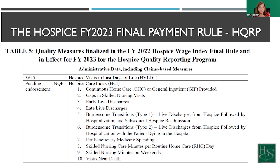Each one of these potentially has a point. You get zero points or one point, with the highest possible score being 10. Each of them is calculated based on whether you are in compliance or not — some require over 90 percent, some require under. Two components I wanted to point out specifically are numbers eight and nine: skilled nursing care minutes per routine home care day and skilled nursing minutes on the weekends. There's no other way for CMS to know the minutes you have spent in a visit without having the units reported on the claims. Make sure your claims reflect the 15-minute increments of time that your clinicians are spending in the home, counting the in and out times from their visit notes on those actual visits.